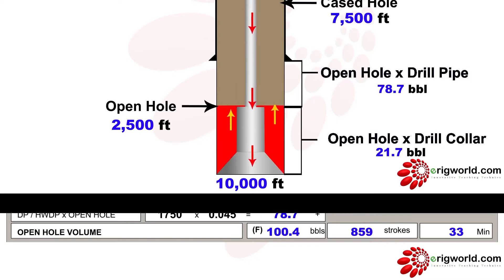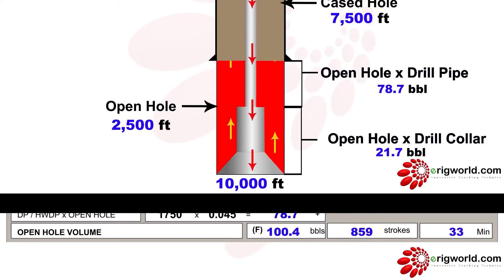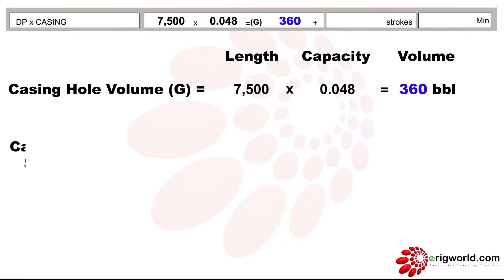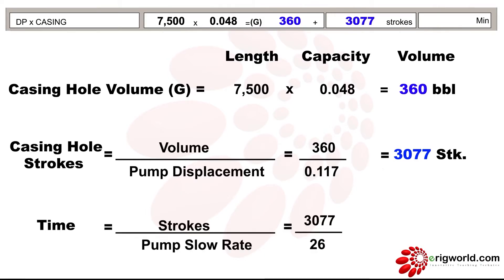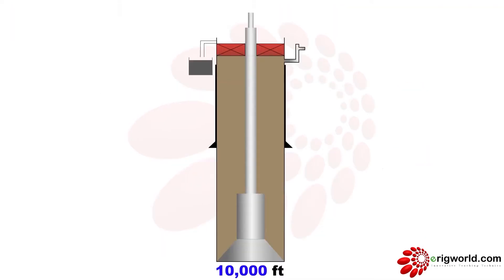To displace from bit to surface, once I calculate strokes using the same formula — volume divided by displacement — I get 3077 strokes. For time, pump strokes divided by slow rate gives me 118 minutes.